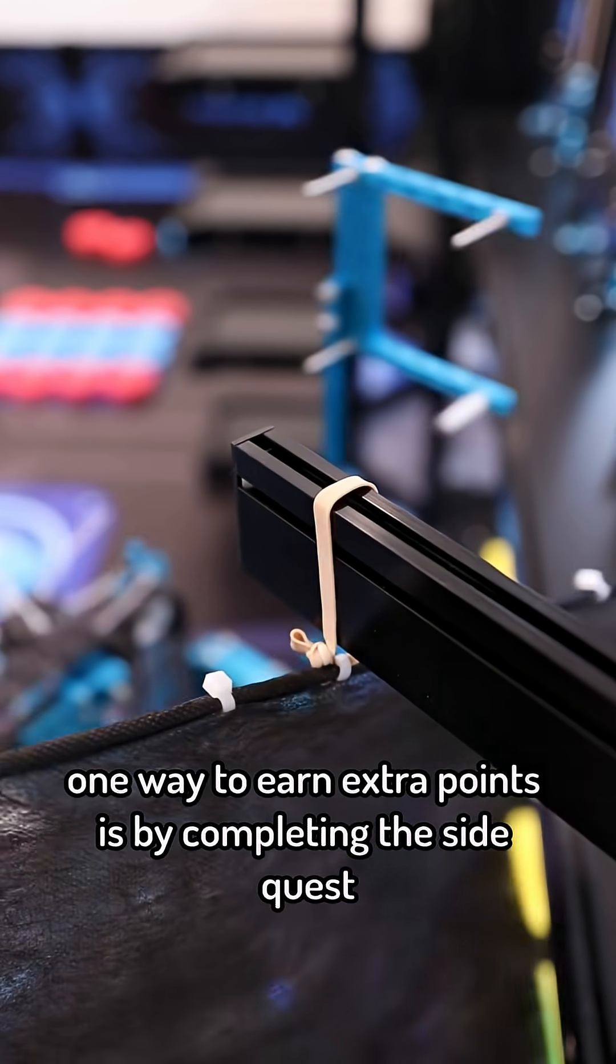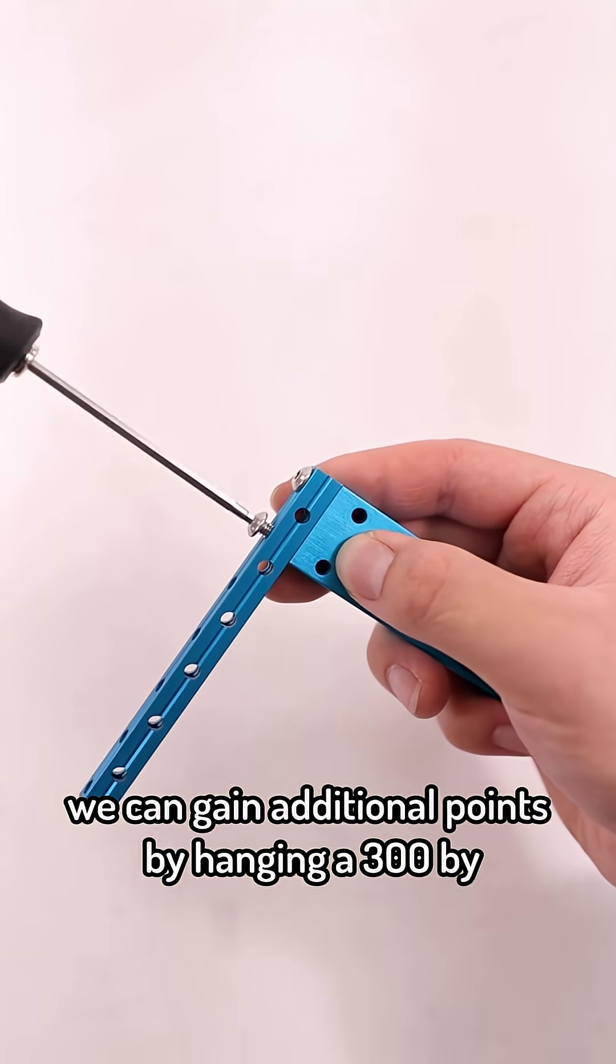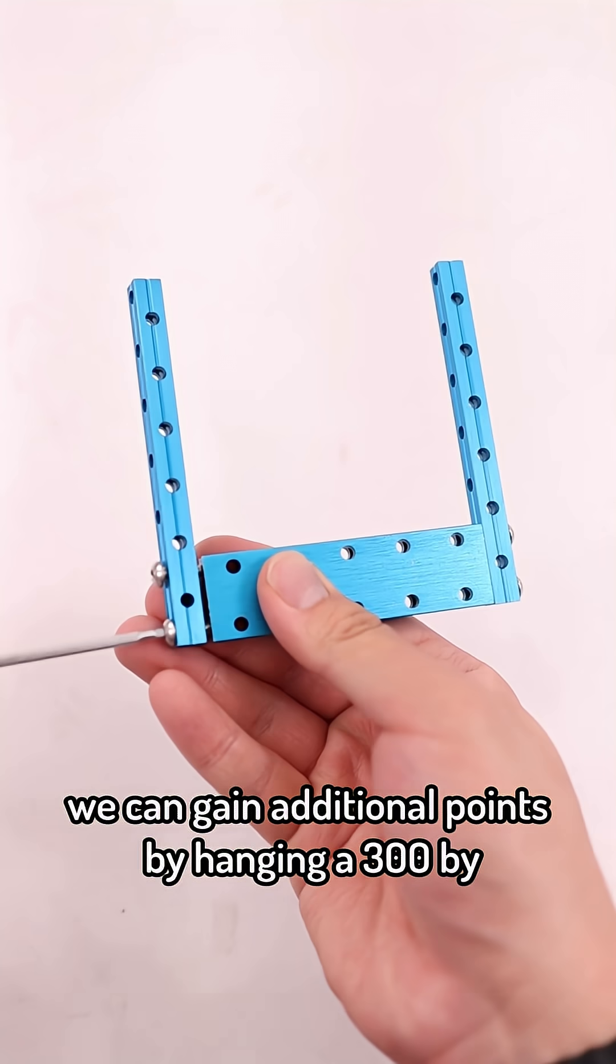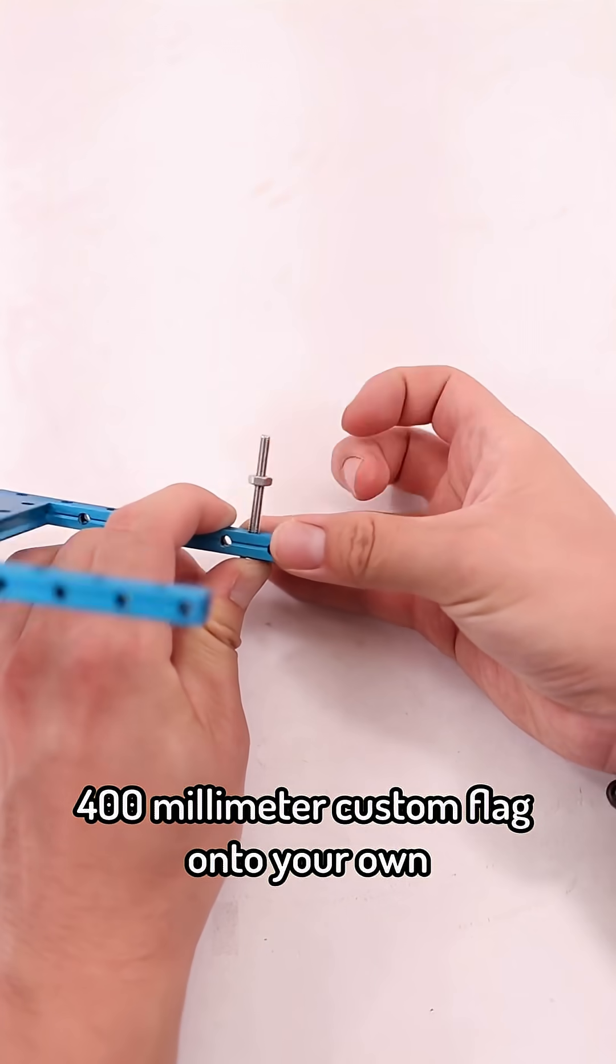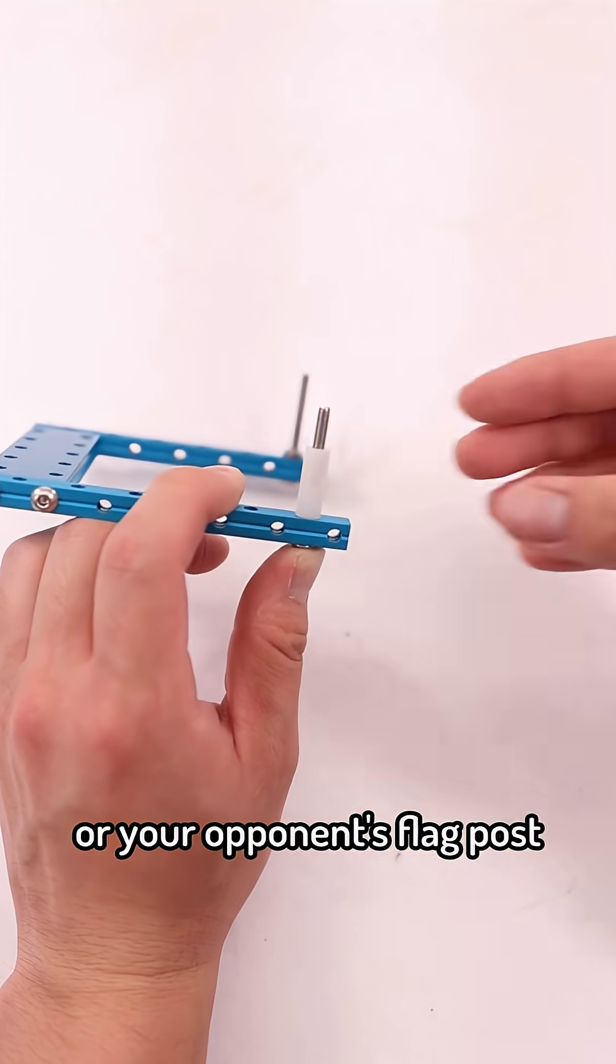One way to earn extra points is by completing the side quest. We can gain additional points by hanging a 300x400mm custom flag onto your own or your opponent's flag post.